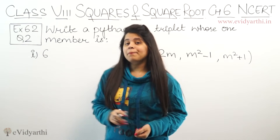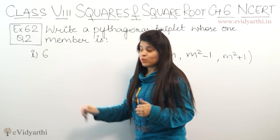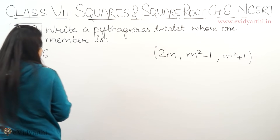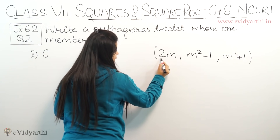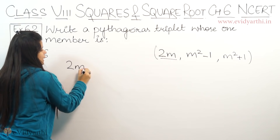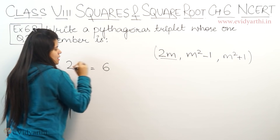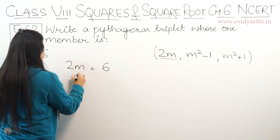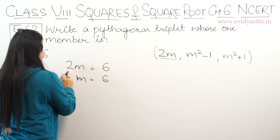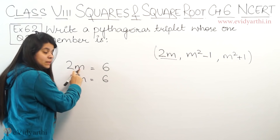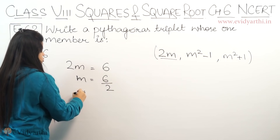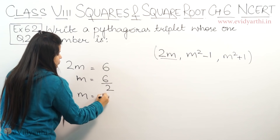From that, we have one number given which is 6. So let's suppose the first number is 2m, which equals 6. So 2m equals 6, then m will be equal to 6 divided by 2. So m equals 3.